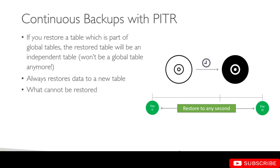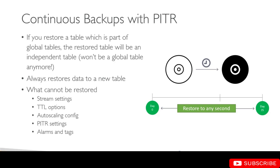What cannot be restored is the same as with on-demand backups: stream settings, TTL options, auto scaling configuration, PITR settings, alarms, and tags. These do not get restored and must be set up manually for the new table. All PITR API calls are logged in CloudTrail for auditing purposes.